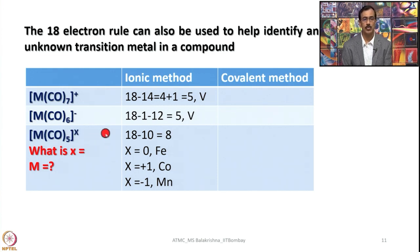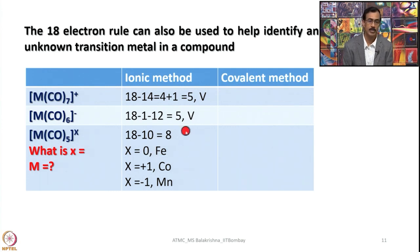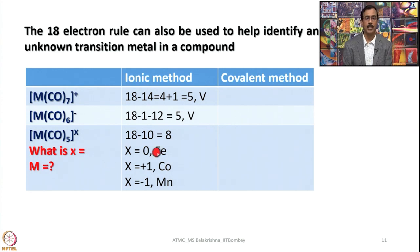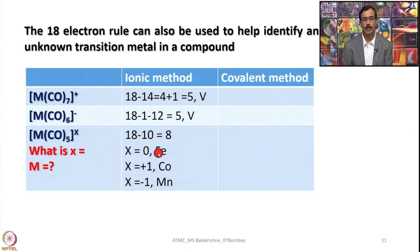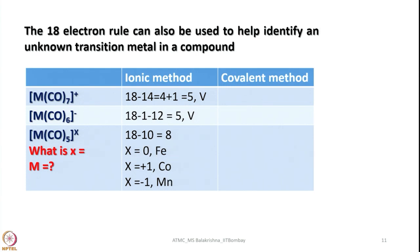When both the metal and charge are unknown, you should identify all possible species rather than giving up. In challenging exams, questions may deliberately present this type of problem, and you should attempt to list all possibilities systematically.